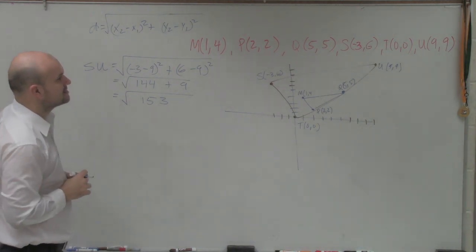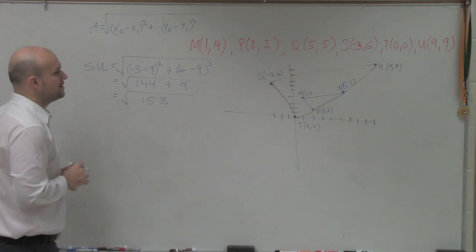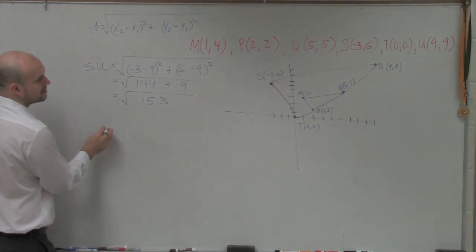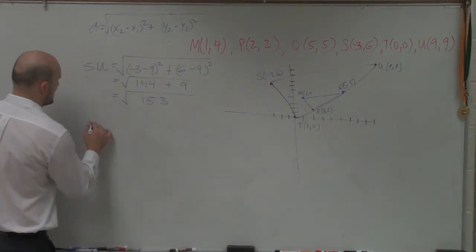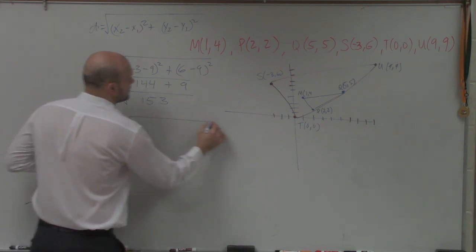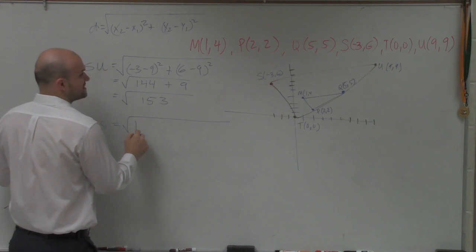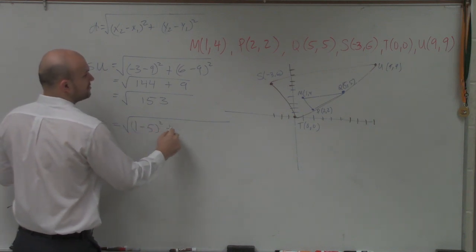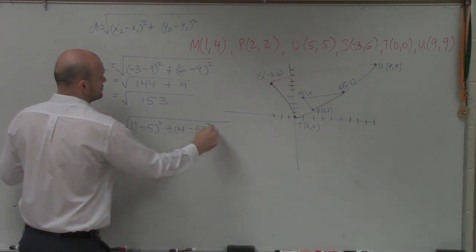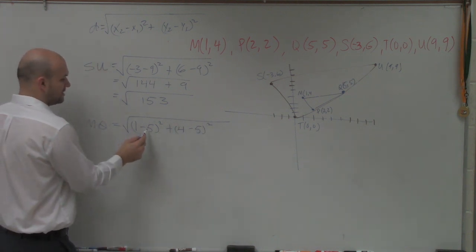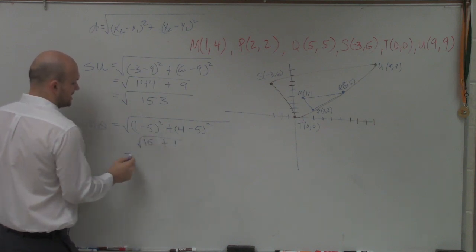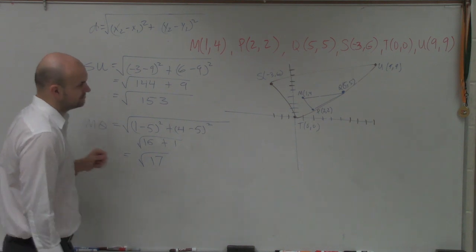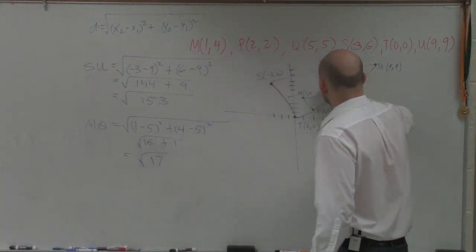Then the next point, I got to do now M to Q. So I'll say MQ. Again, doing the same thing. Subtract the x coordinates, subtract the y coordinates. So I say (1 minus 5) squared plus (4 minus 5) squared. So 1 minus 5 squared is going to be -4. Negative 4 squared is 16. 4 minus 1 is -1. Negative 1 squared is going to be 1. So that equals the square root of 17. So now we've pegged these two.